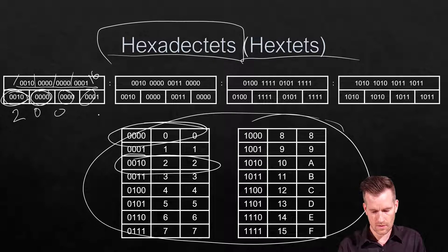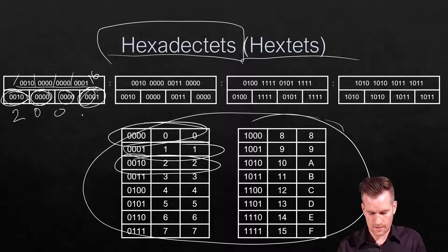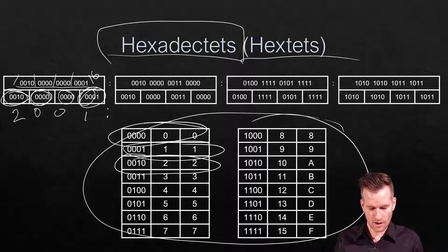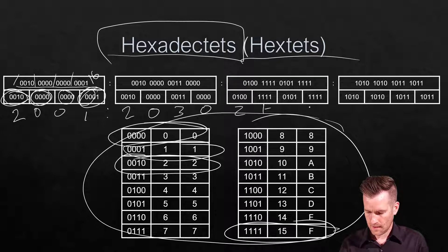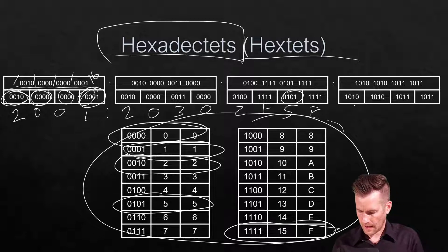So we have 1, then colon. Going through this, we get 2, 0, 3, 0. Then all 1's is F, then 0101 is 5, and 1010 is A.